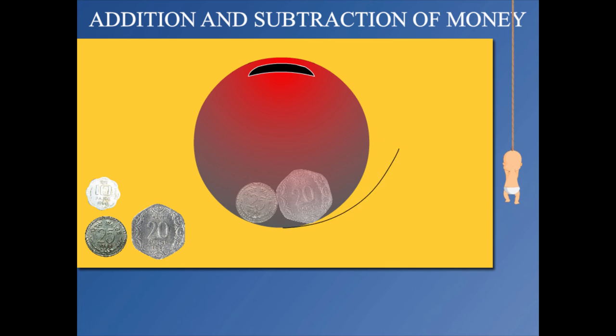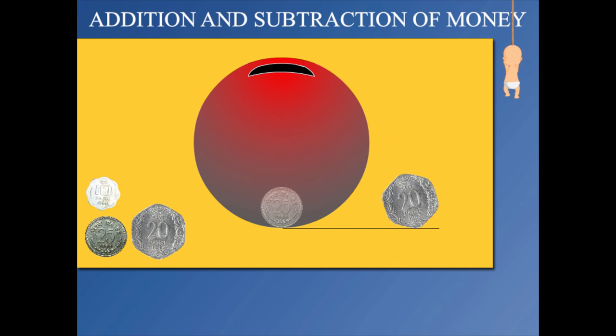The bank has 45 Pesa in two coins. The 20 Pesa coin rolls out. How much in the bank?